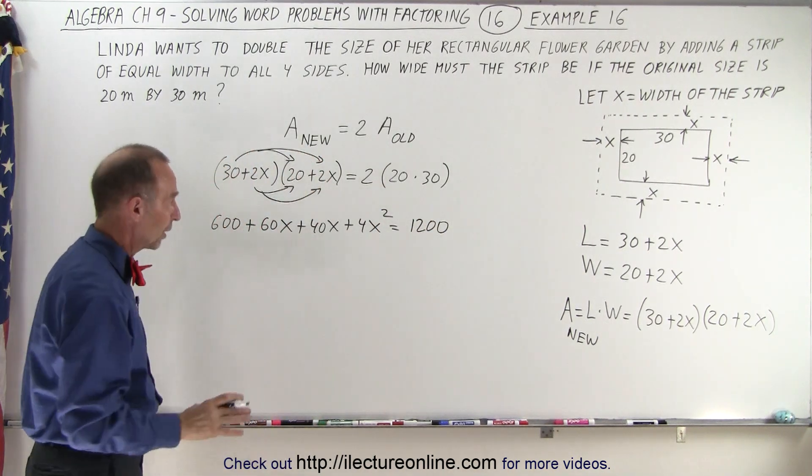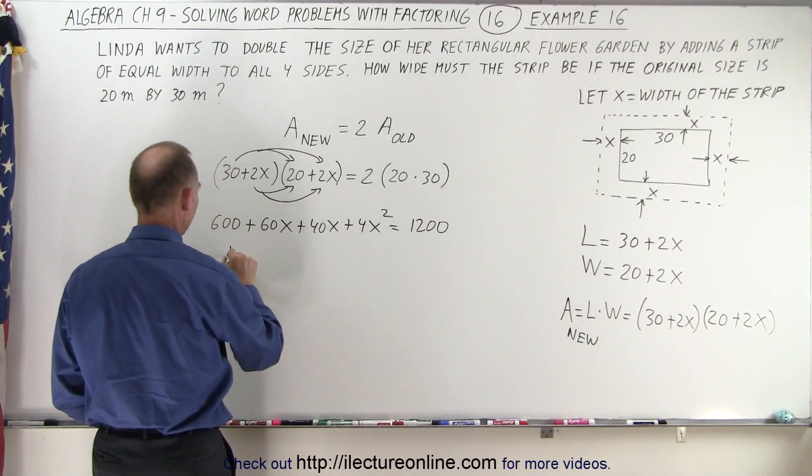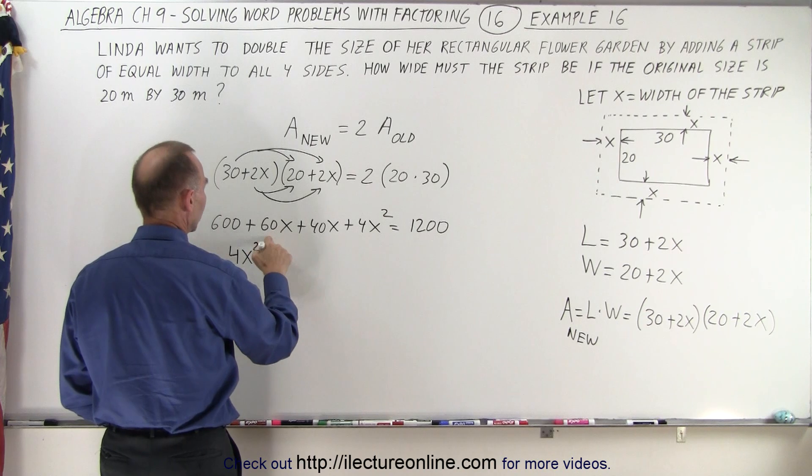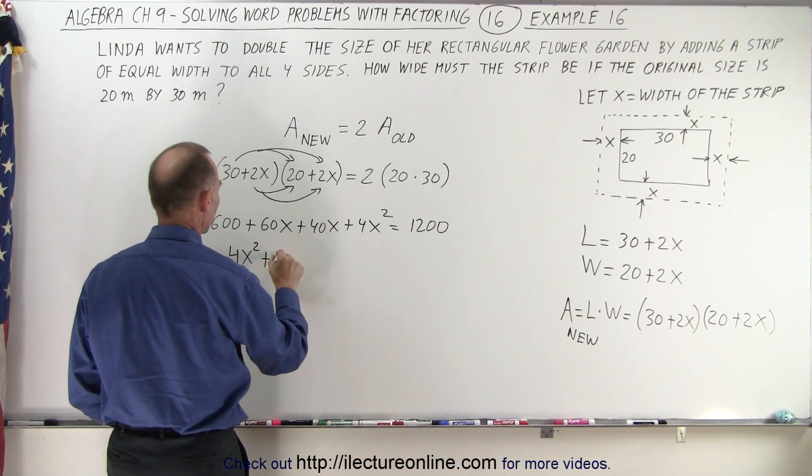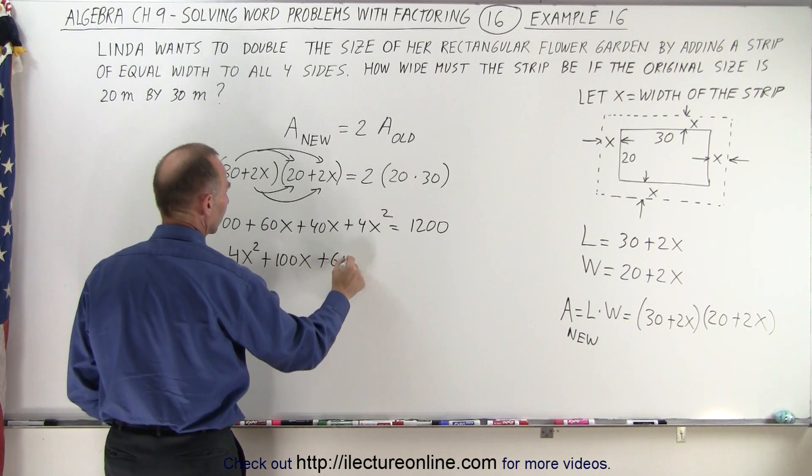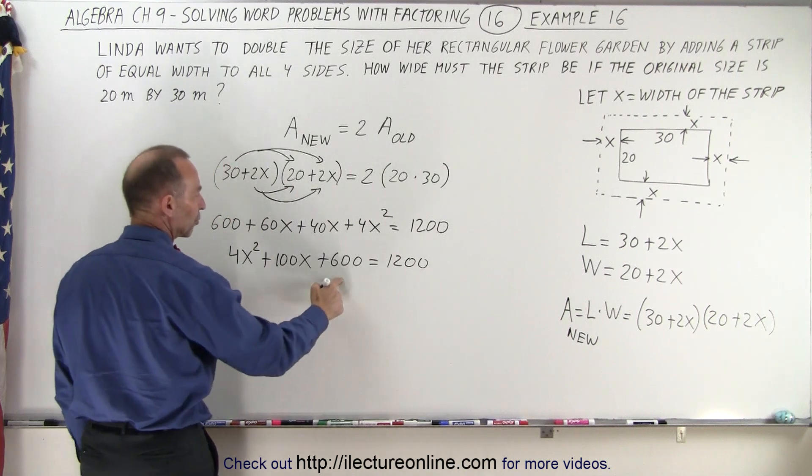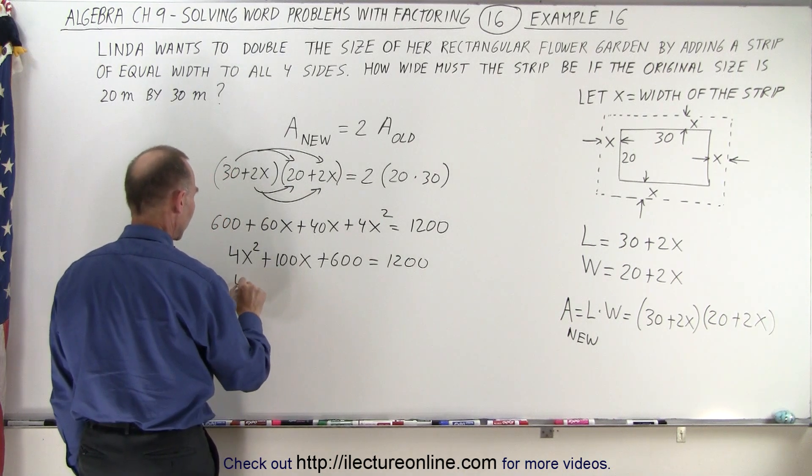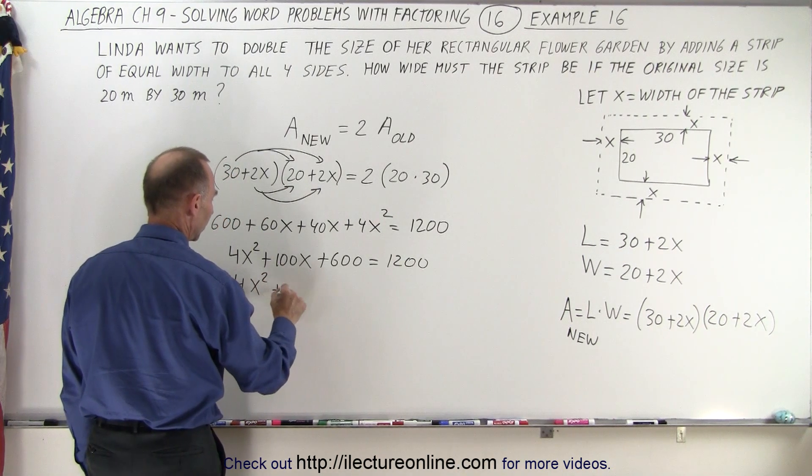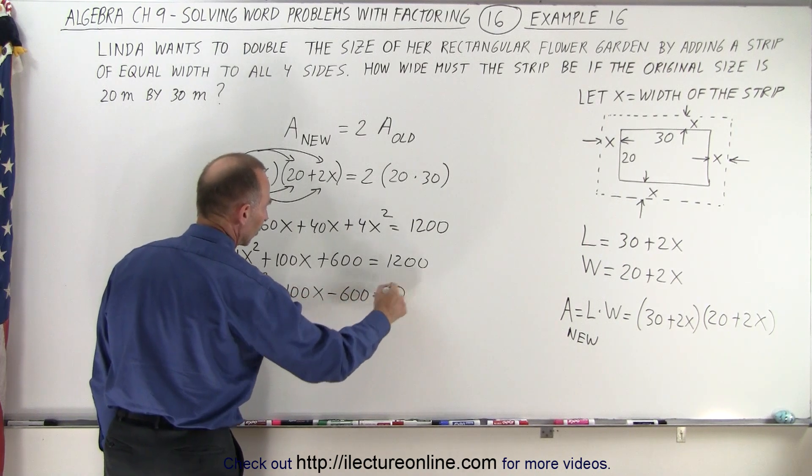Looks like a quadratic equation so let's gather all the common terms. So we have 4x squared, 60x plus 40x that would be plus 100x, and that would be plus 600 equals 1200. So now we move the 1200 to the left side, subtract 1200 from both sides. So we get 4x squared plus 100x minus 600 equals zero.